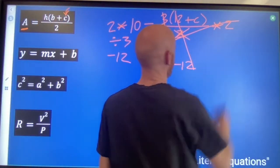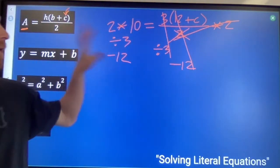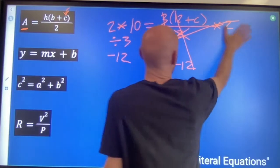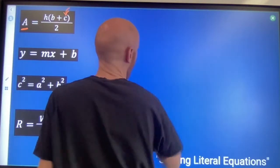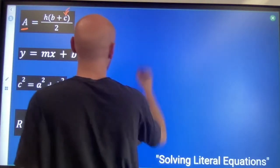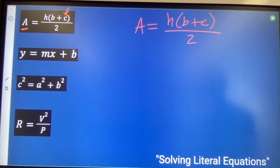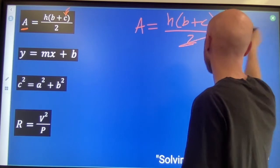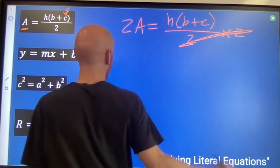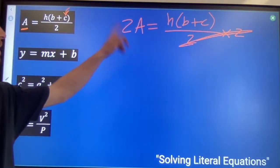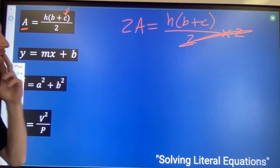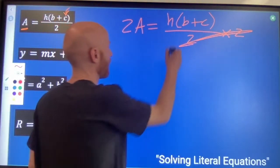So that's the steps you would take if there were numbers in here. Now there's not numbers in here but you're going to take the same steps. I'm going to multiply both sides by 2 to get rid of this 2. So I've got 2As. Now 2As equals H times that parentheses.